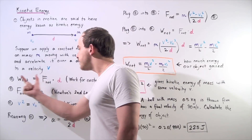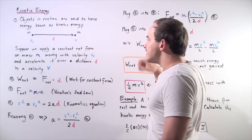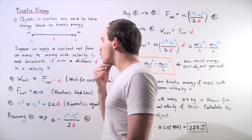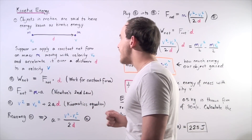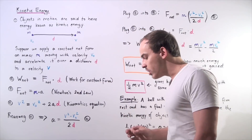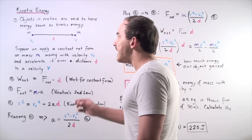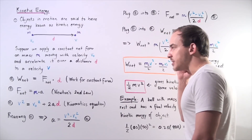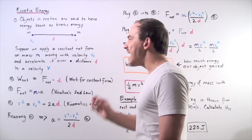Let's begin by using our formula for work for a constant force. Because we have a constant net force, the work done on our mass is simply given by the following equation: the net work done on the mass equals the net force acting on the object multiplied by the displacement over which our force acts. Now, let's recall Newton's second law of motion: the net force acting on the object equals mass m multiplied by acceleration. Because we have a constant net force, that means we have a constant acceleration.